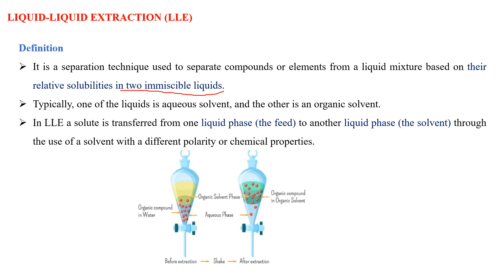Liquid-liquid extraction is mainly based on the relative solubility of the component. The component will be dissolved in the second solvent, and then only the component will be separated from the first liquid to the second liquid. That is why the separation mainly depends upon the relative solubility of the component. The two solvents are immiscible liquids — one is the aqueous solvent and another is the organic solvent.